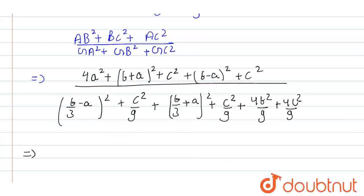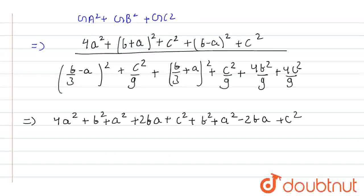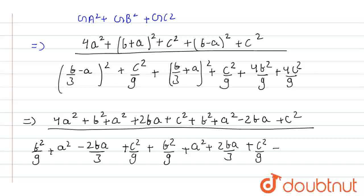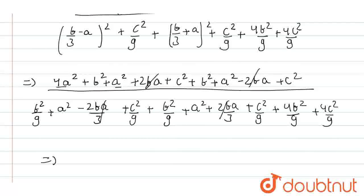Now we expand (a + b)² and (a − b)² in numerator and denominator. In the numerator it becomes: 4a² + (b² + a² + 2ba + c²) + (b² + a² − 2ba + c²). The +2ba and −2ba terms cancel each other out. Collecting terms: 4a² + a² + a² gives 6a², and b² + b² gives 2b², and 2c².